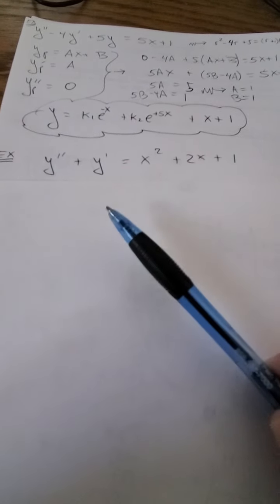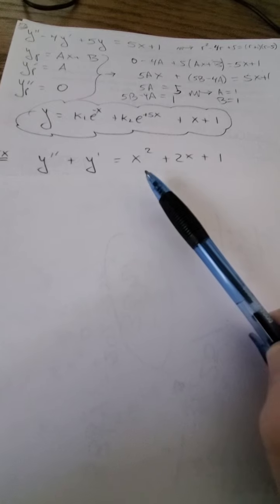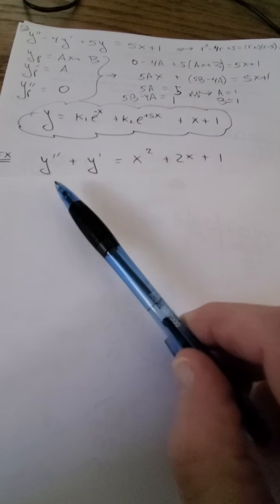See, because if y was just x to the second power, I would never have an x to the second power in my answer because I only have y prime and y double prime. I need y to be a higher power to happen.